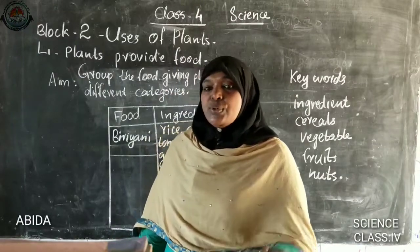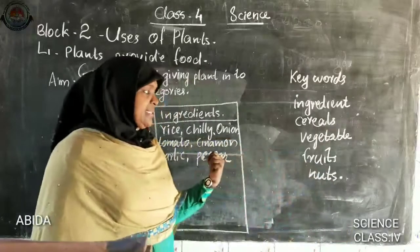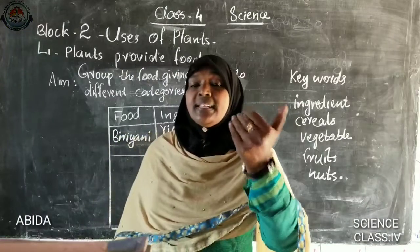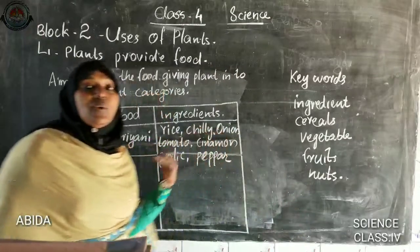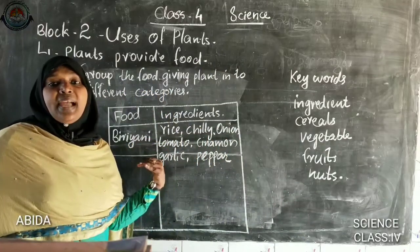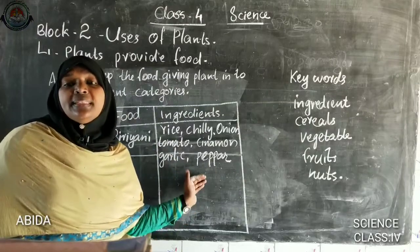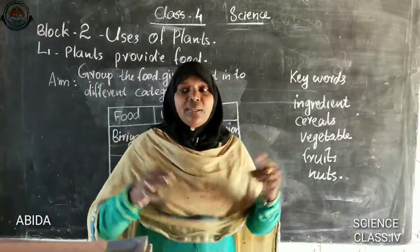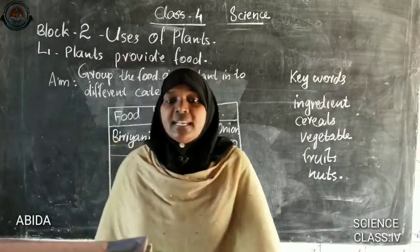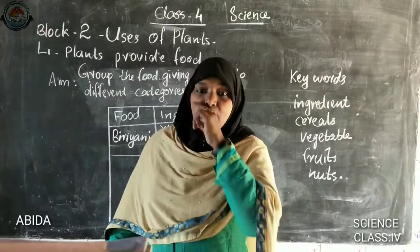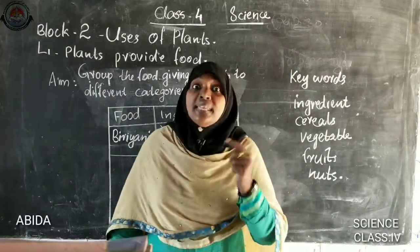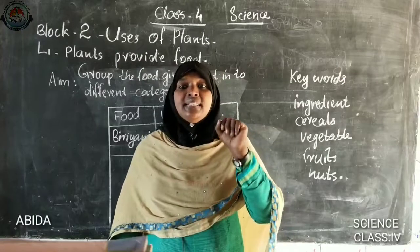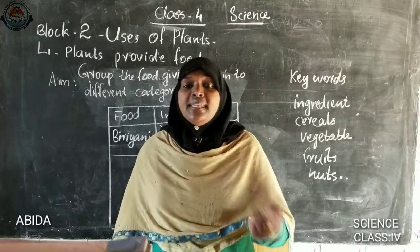Now you have to draw a table like this and write five dishes — whichever dishes you like more. In the first column write the food item, and in the second column write the things used to make the dish. Then sort the things into different groups. Before grouping, we have to check which part of the plants we eat, or which parts of the plants are edible. Edible means safe to be eaten as food.